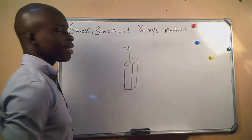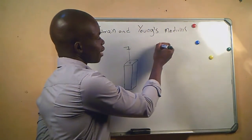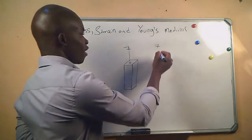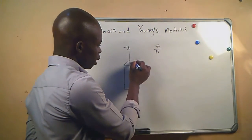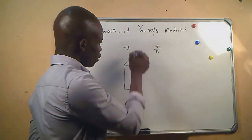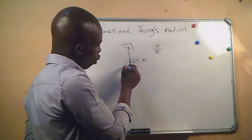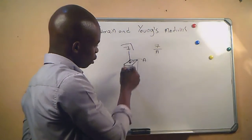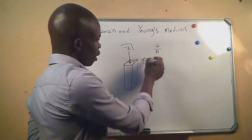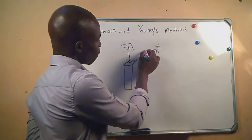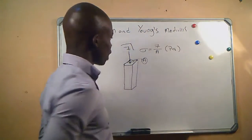We will start by looking at what stress is. Stress is simply the ratio of the force divided by the area over which it is applied. The area we are talking about is the cross-sectional area over which the force is applied, and stress is given in Pascal — that's the SI unit of stress.